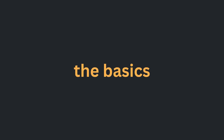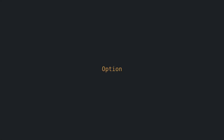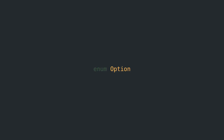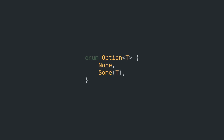Let us start out by looking at what an option is. An option is defined as an enum. It can either be a None or a Some variant. The Some variant holds data of arbitrary type T.